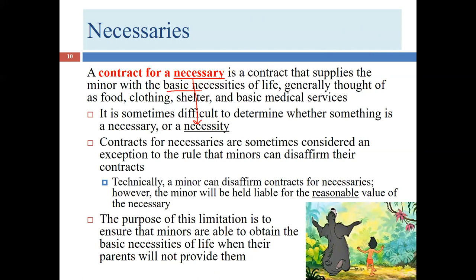Necessaries are the basic necessities of life: food, clothing, shelter, and basic medical services. Imagine a 17-year-old kicked out by their parents with nowhere to go — they need to sleep somewhere, eat, see a doctor if hurt, and buy clothes. The law doesn't want minors unable to obtain these things.